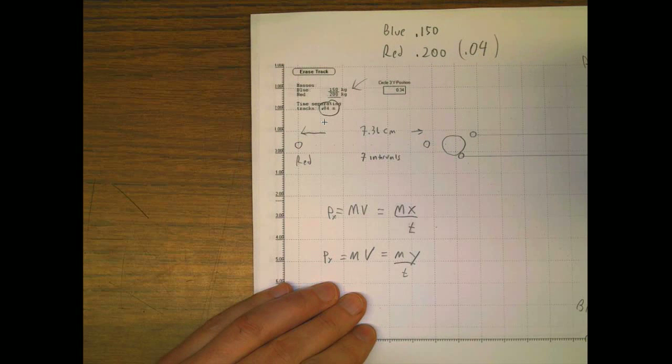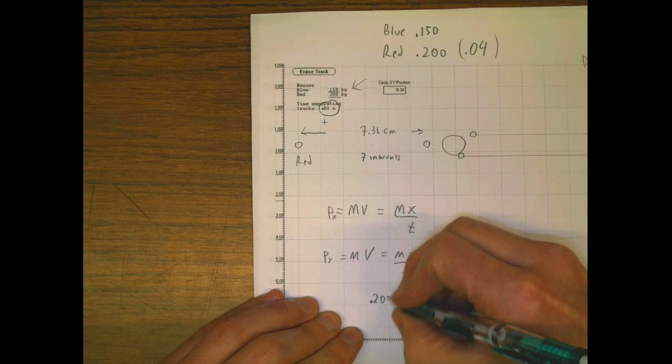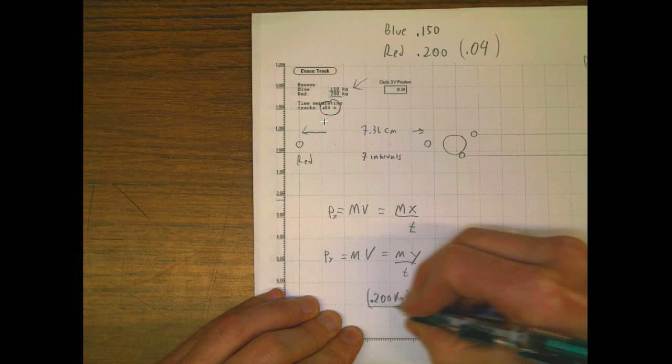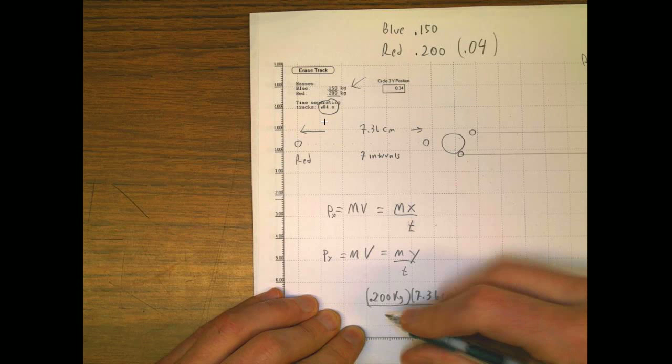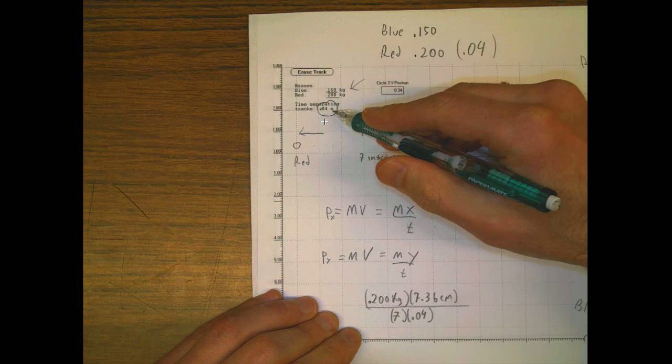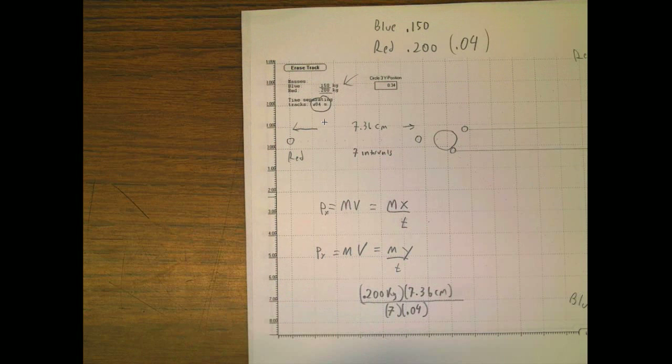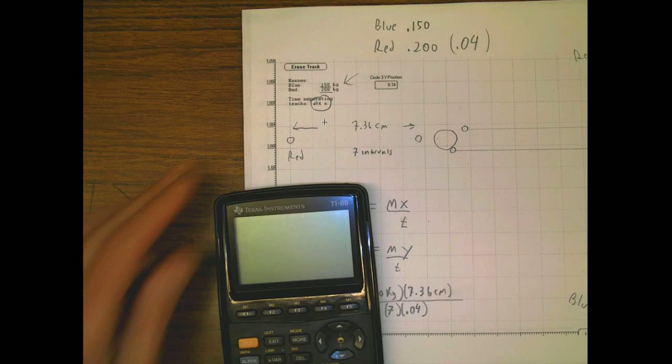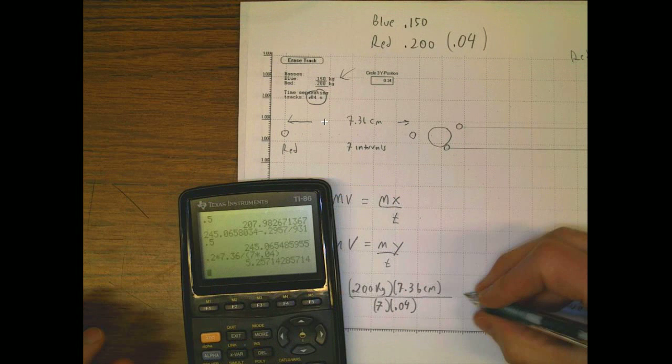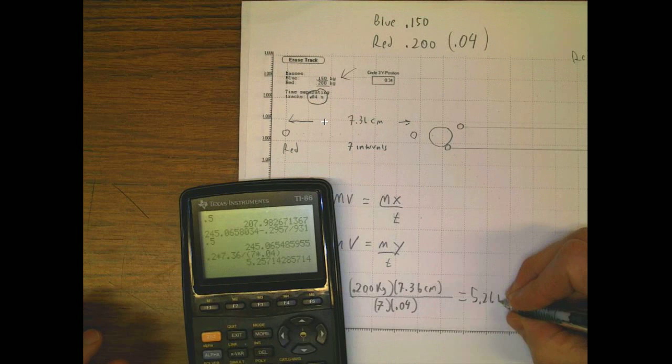And my first red one, this momentum right here, literally that guy is going to be the red one is 0.2 kilograms. And it's times 7.36 centimeters divided by 7 times 0.04, because it says on there every dot is 0.04 separated. So I just count the gaps between them. So I can take my calculator, and I can go 0.2 times 7.36 divided by parentheses 7 times 0.04.